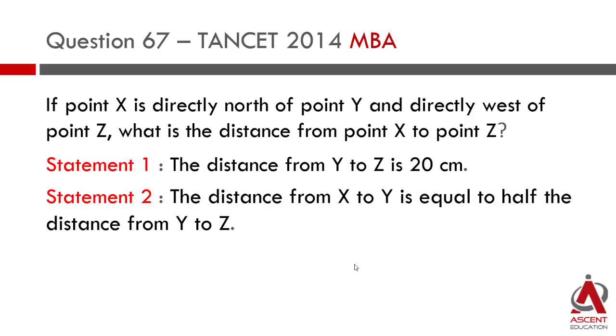If point X is directly north of point Y and directly west of point Z, what is the distance from point X to point Z? Statement 1: the distance from Y to Z is 20 centimeters. Statement 2: the distance from X to Y is equal to half the distance from Y to Z.